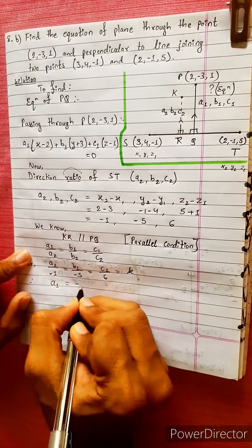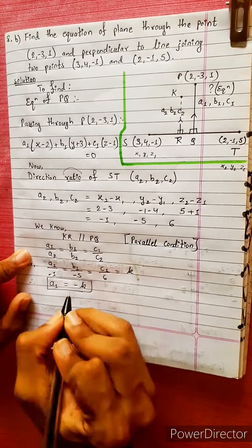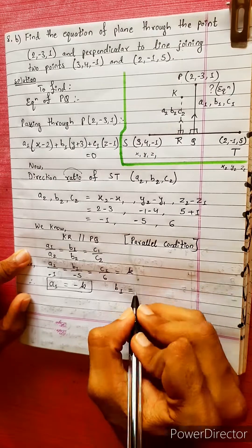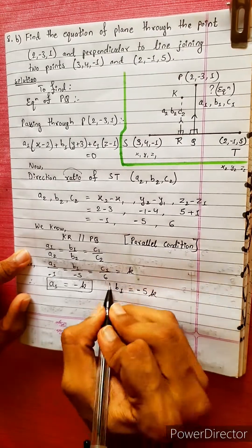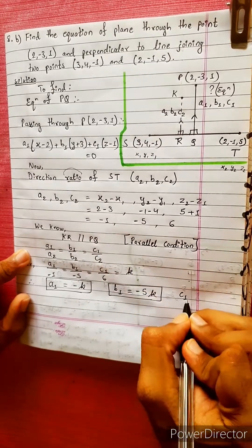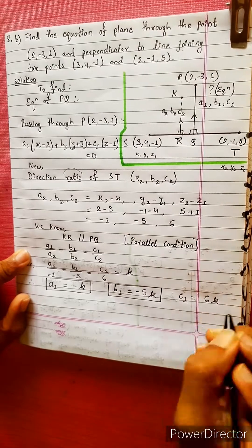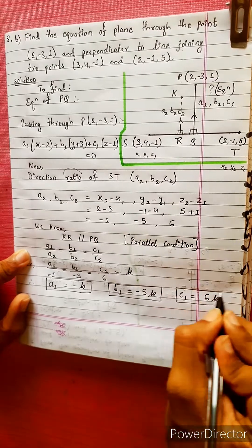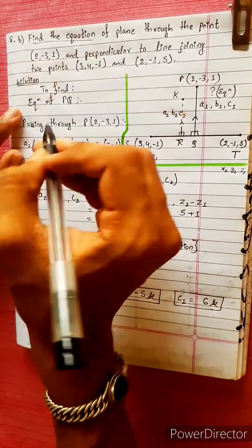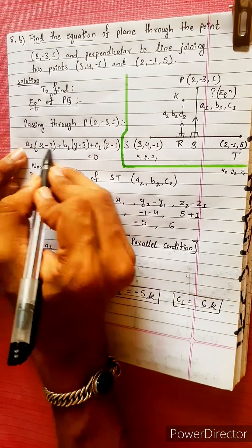Therefore: A1 = -K, B1 = -5K, C1 = 6K. We can assign the constant K. Now I am going to find the equation of PQ using these values.